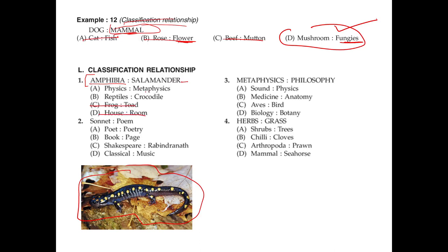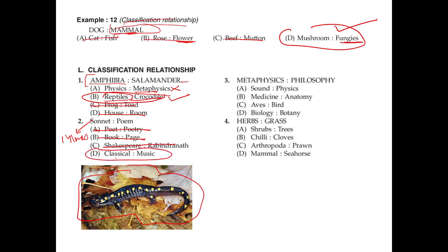Metaphysics is a classification, not physics. Reptiles is a classification — and crocodile is a reptile — so that is the right answer; the one with the wrong sequence is incorrect. Sonnet is a specific type of poem with 14 lines. Poet is a person, so there's no person involved here. Book and page involves an object, and Shakespeare is also a person. So D is correct because classical is a classification of different types of music.